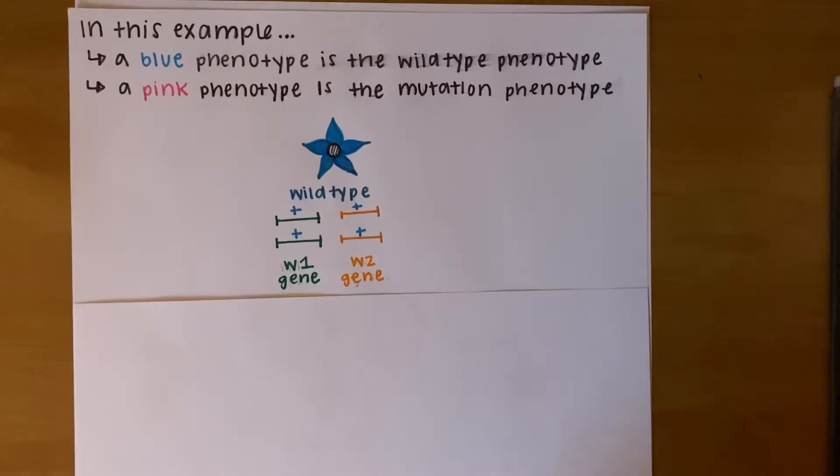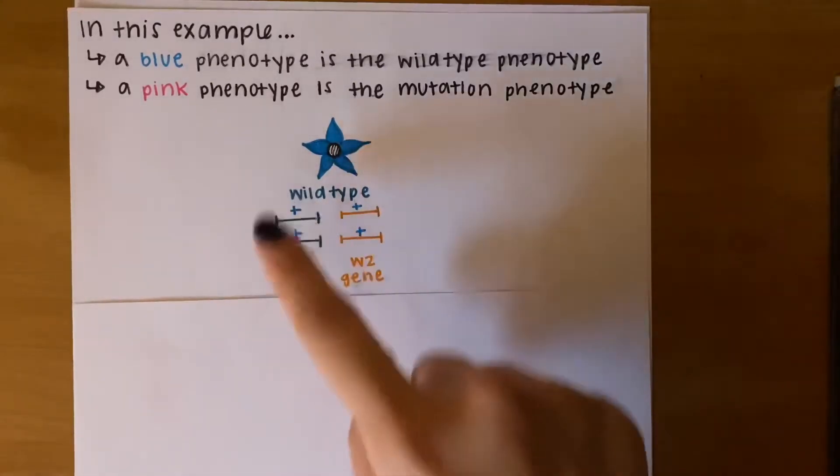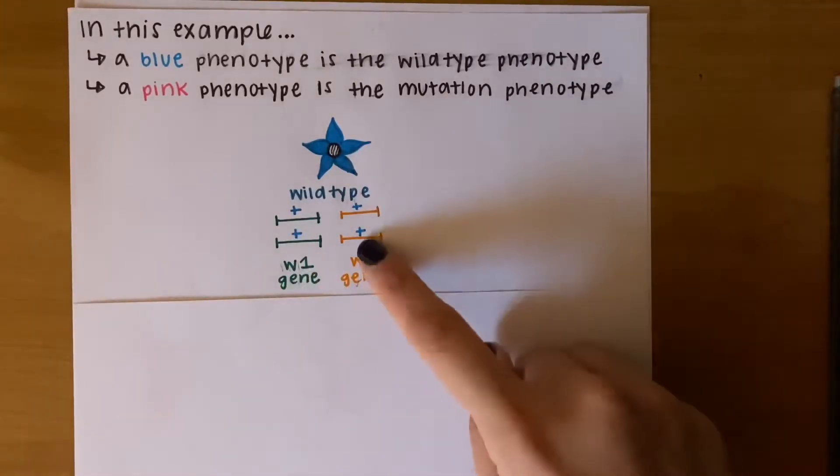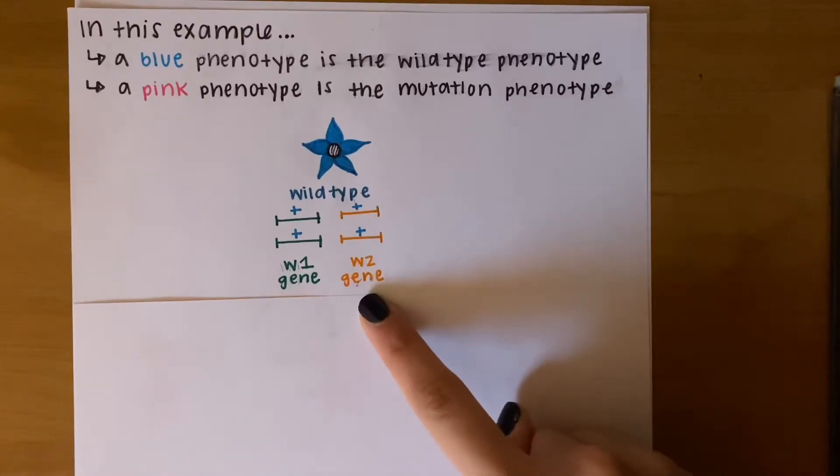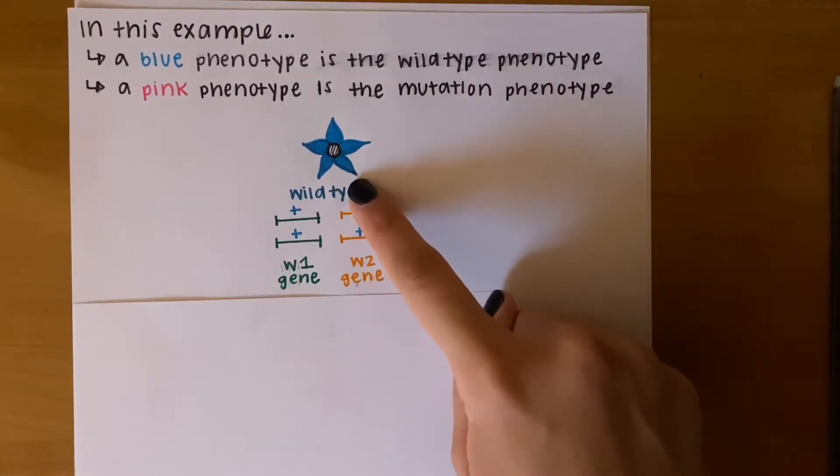The blue petals have plus signs for both alleles in the W1 gene and plus signs for both alleles in the W2 gene. This is what gives the petal the blue phenotype.